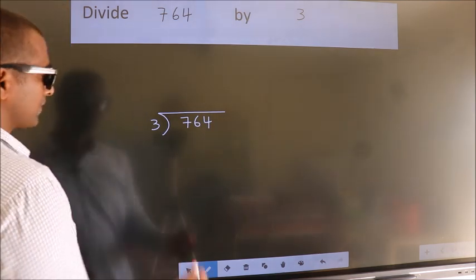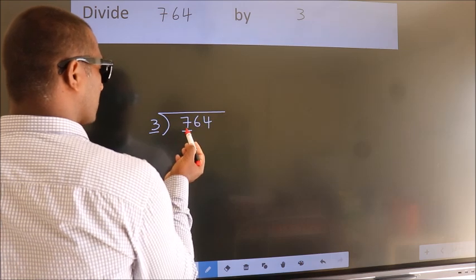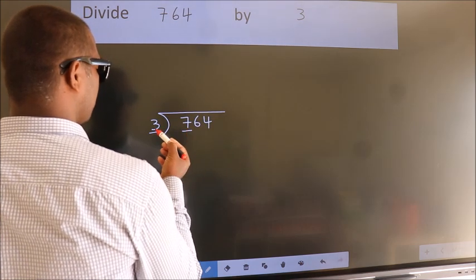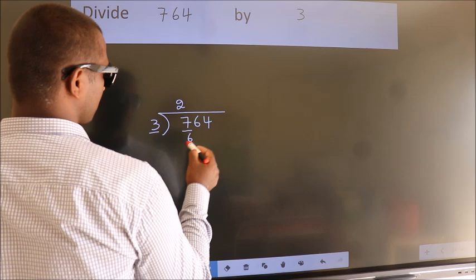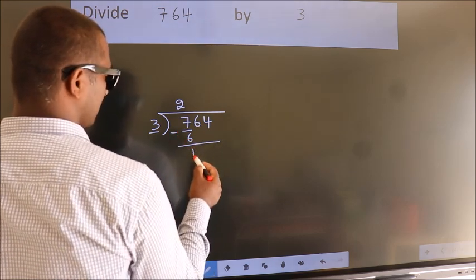Next, here we have 7, here 3. A number close to 7 in 3 table is 3 2's 6. Now we should subtract. We get 1.